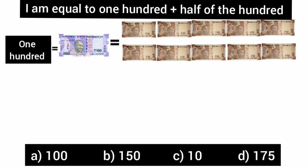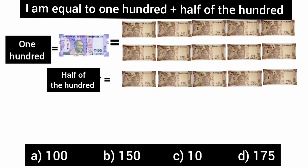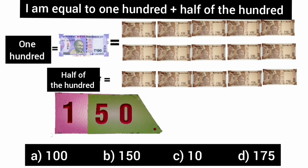Now children, in the same way, half of the hundred will be shown by how many notes of ten rupees? Yes, very good. It is shown by five notes of ten rupees. So children, the sum of one hundred and half of hundred comes out to be one hundred fifty. So option B is the correct answer of this question.